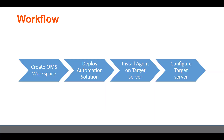The workflow to configure a hybrid worker looks like this: first, you need to have an OMS workspace in place. Second, you should already have deployed an automation solution inside that workspace. Third, you need to install the MMA (Microsoft Monitoring Agent) on the target server. Lastly, you configure the target server using PowerShell cmdlets that are deployed when you install the MMA agent.